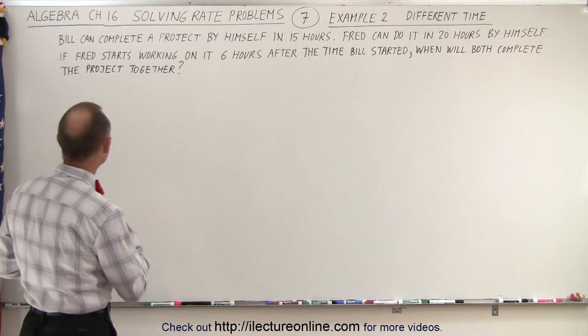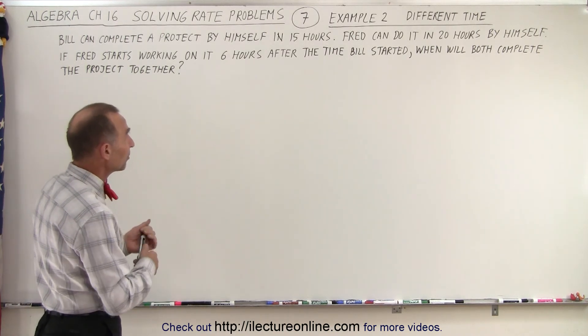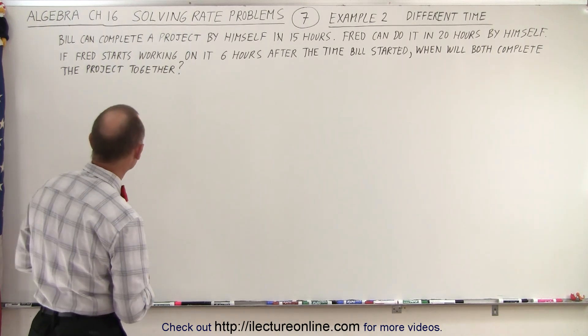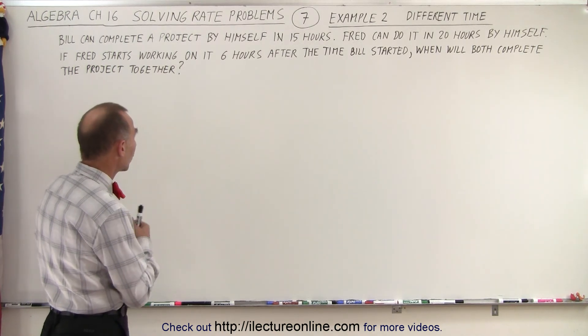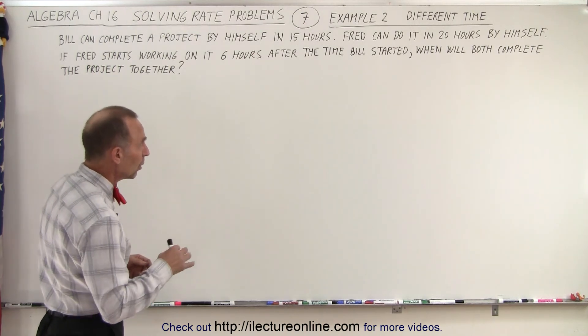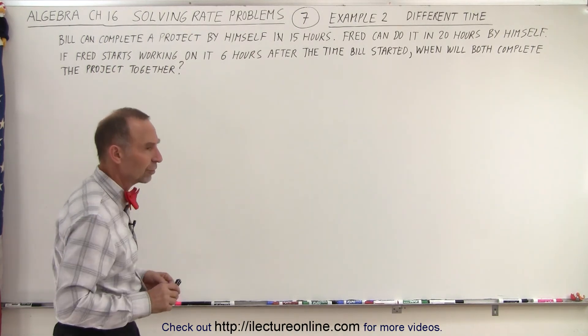Here we have Bill that can complete a project by himself in 15 hours and Fred who can do it in 20 hours also working by himself. But if Fred starts working on it six hours after Bill started working on it, when will both complete the project together?